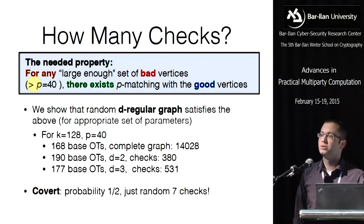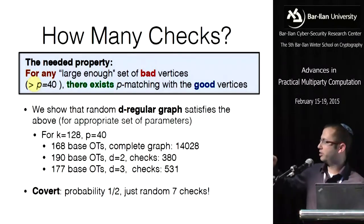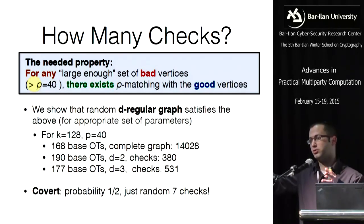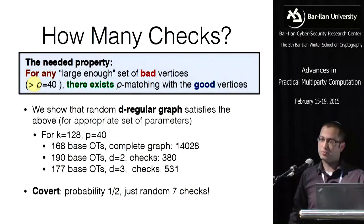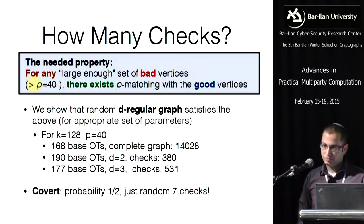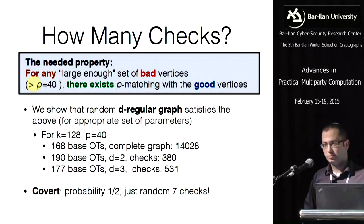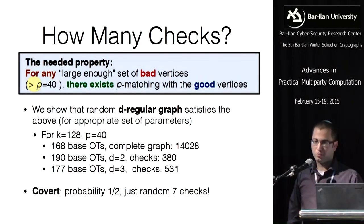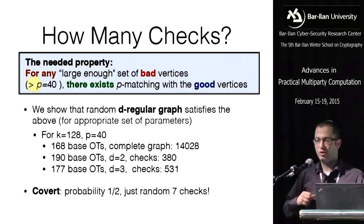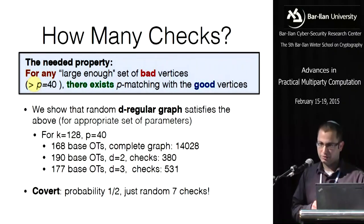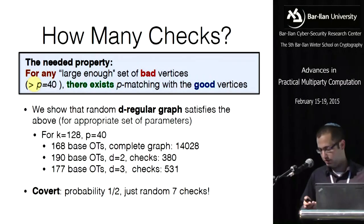In response to a question: the graph has to be sent after the receiver sends its messages — it's like a challenge. The sender sends the graph (challenges) and the receiver responds. It cannot be fixed ahead of time. Regarding the asymptotic complexity, it's roughly K plus some multiple of the statistical security parameter.